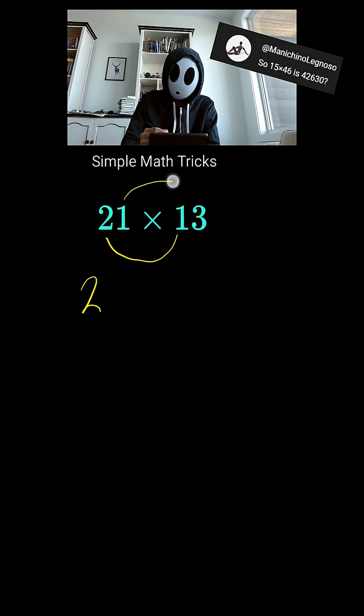So, 21 times 13, you just multiply the 2 and 1, gives us 2, multiply the 1 by the 3, we write a blank, and then it's a 3.